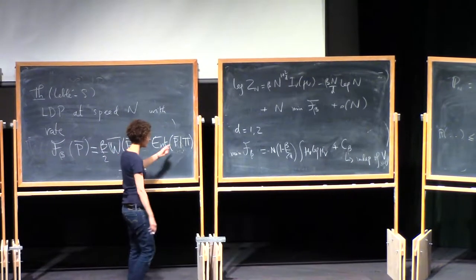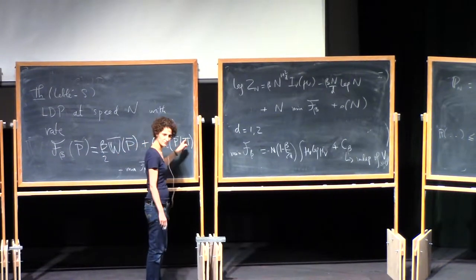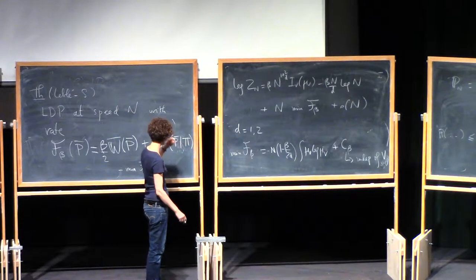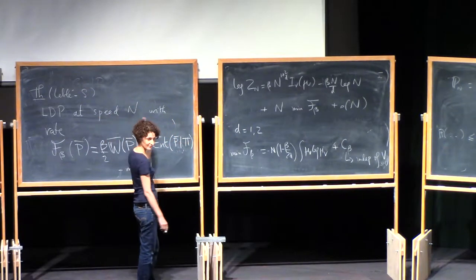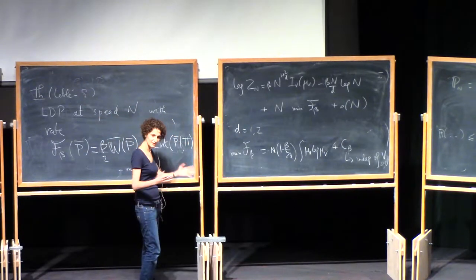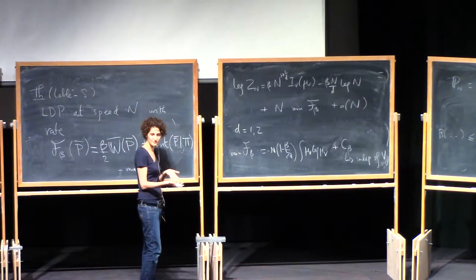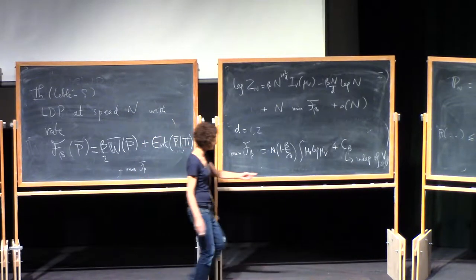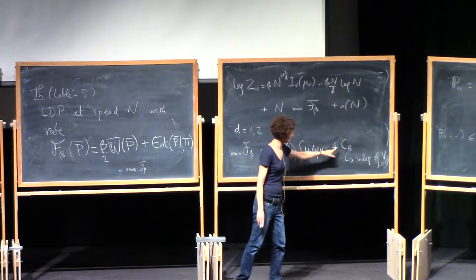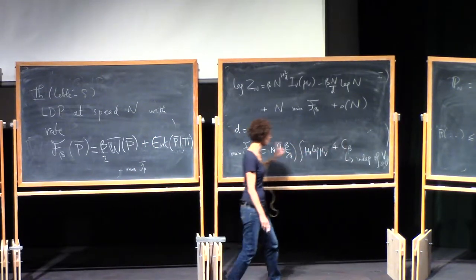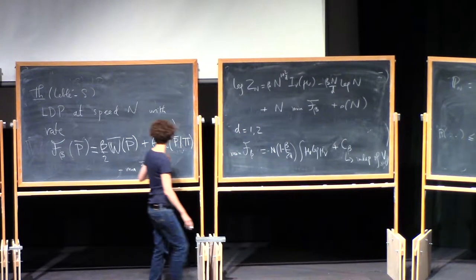When you rescale, it depends on mu_V and then you rescale everything — it's just the Poisson with intensity one, and it goes into C_beta. C_beta is the minimum you get when you normalize everything to have intensity one.